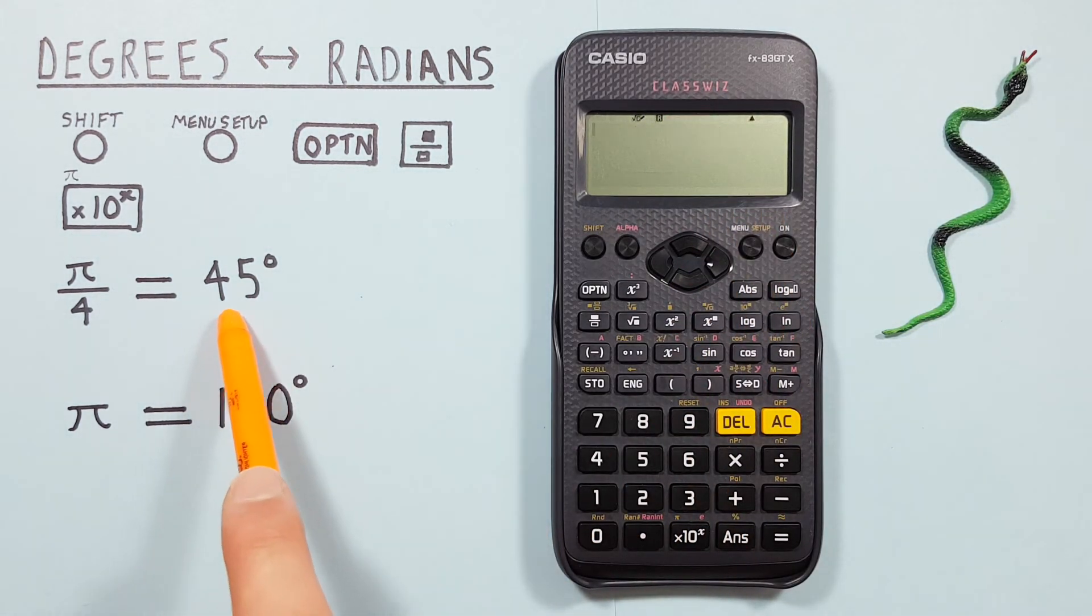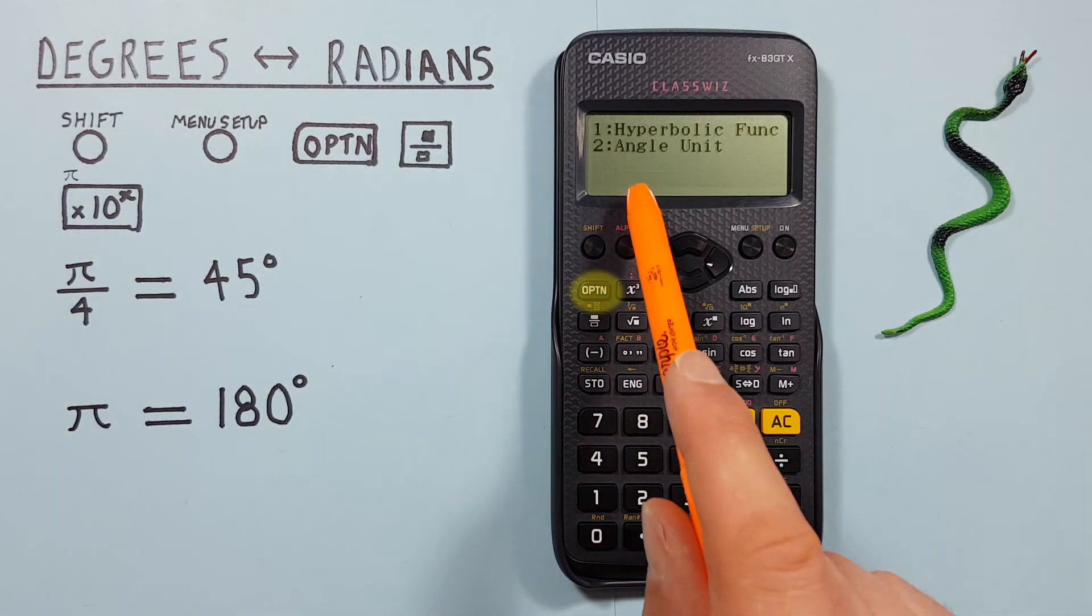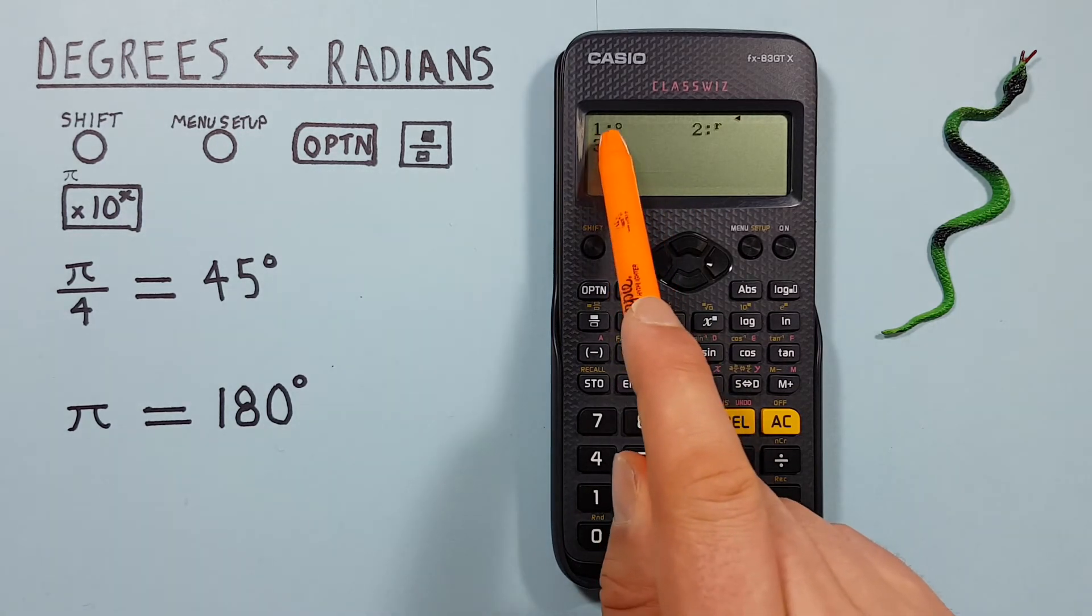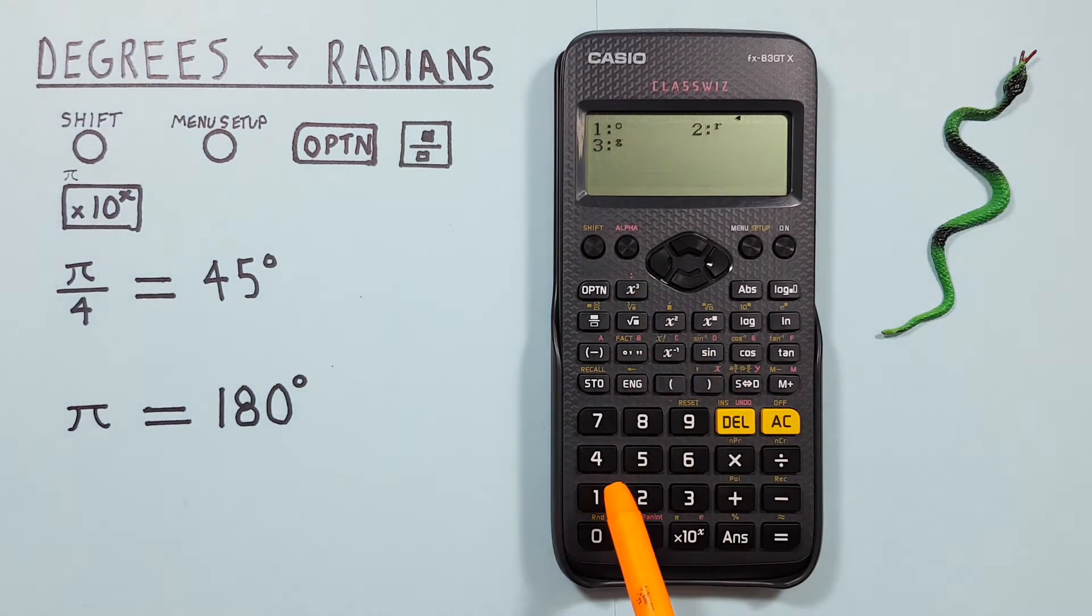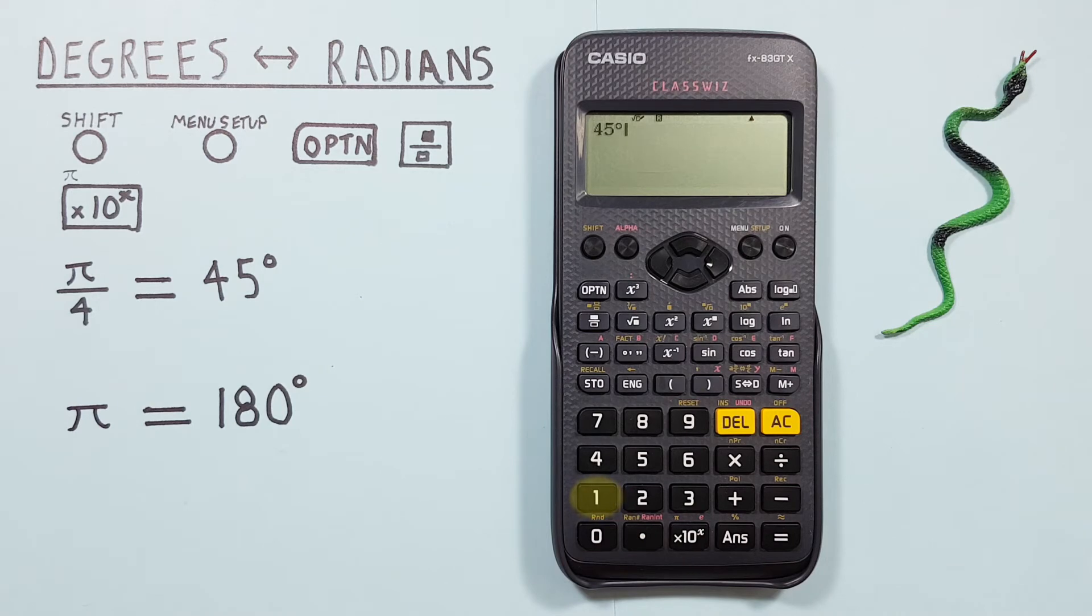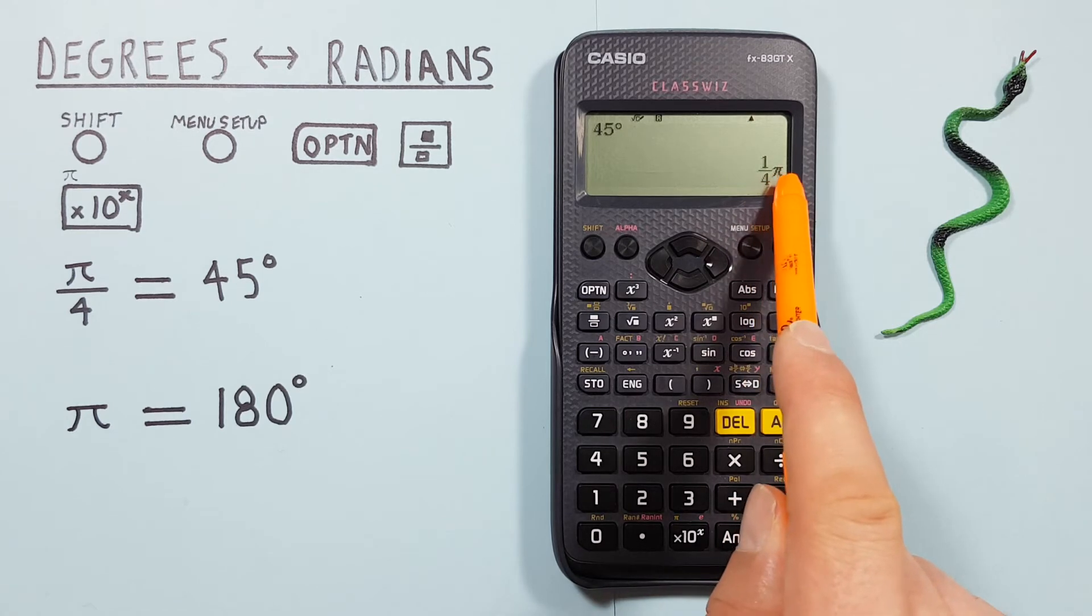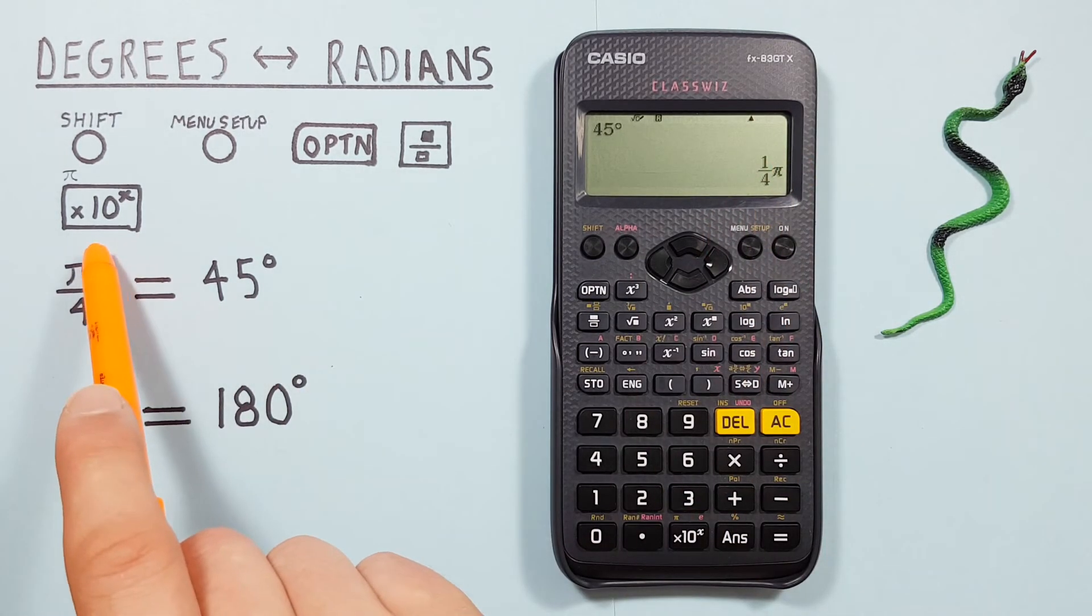Now we can enter our 45 degrees, press Option, 2 for Angle Unit, and then these are degrees, so we press number 1 for the degree symbol. Now we press equals, and we see we get a result of 1 over 4 π, which is the same as π over 4.